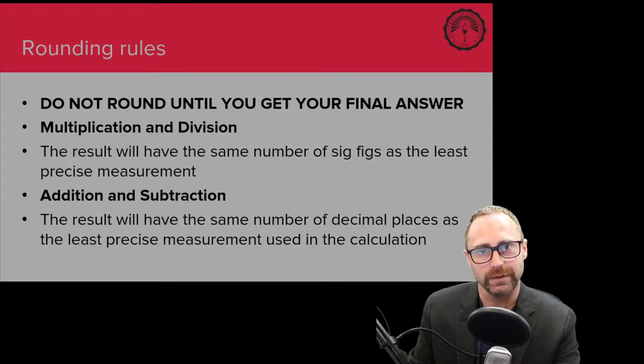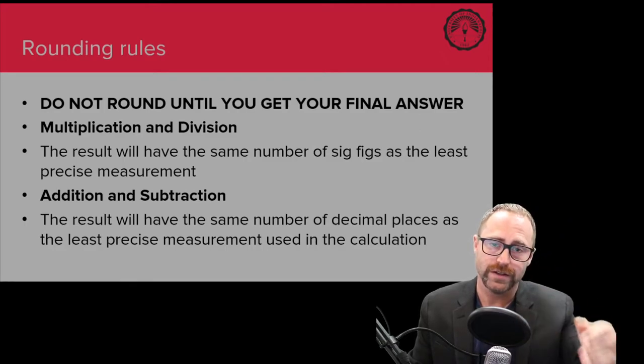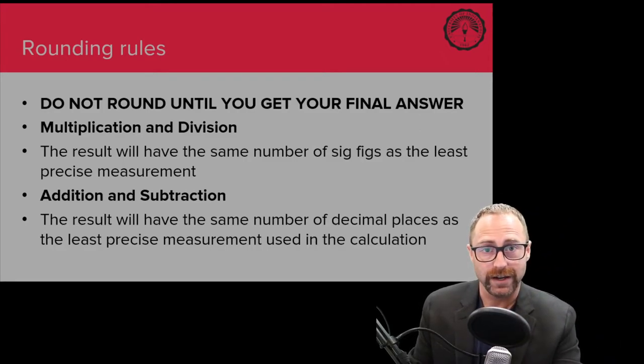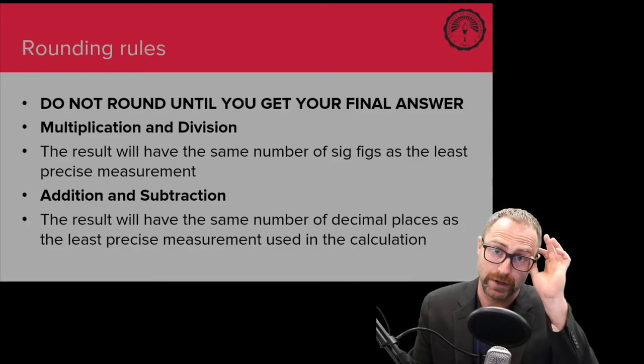For addition and subtraction, it's going to be a little bit more complicated. What you're going to need to do, and we're going to practice these in class, is line up your addition and subtraction problems in that nice vertical way that you have done previously, and make sure that your decimals line up. Your final answer is going to have the same number of decimal places as your least precise measurement.